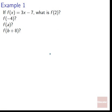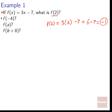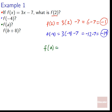Ready for some examples. If f of x equals 3x minus 7, what is f of 2? We just plug in: 3 times 2 minus 7 = 6 minus 7 = negative 1. If we have f of negative 4: 3 times negative 4 minus 7 = negative 12 minus 7 = negative 19. What if we have a variable? f of a: what happened to x? It became 3x minus 7, so now it becomes 3a minus 7.